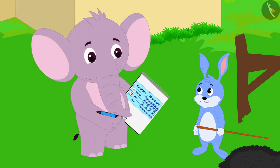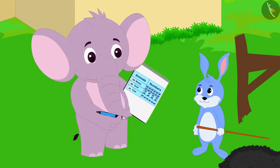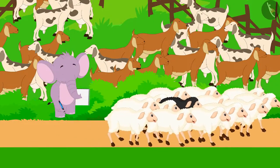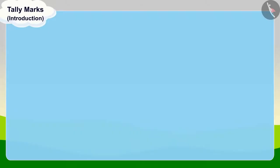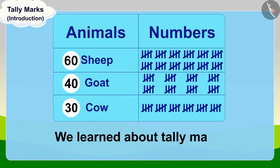Appu found out the total number of cows. He thanked Bunny for telling him about tally marks and gave him his sheep to graze. Children, in this lesson we learned about tally marks. In the next video, we will learn more about it through some interesting examples.